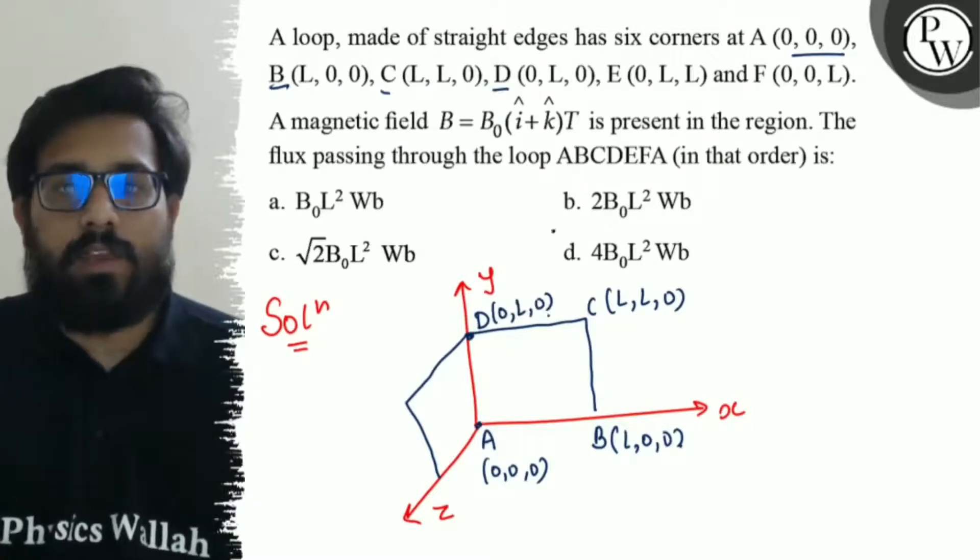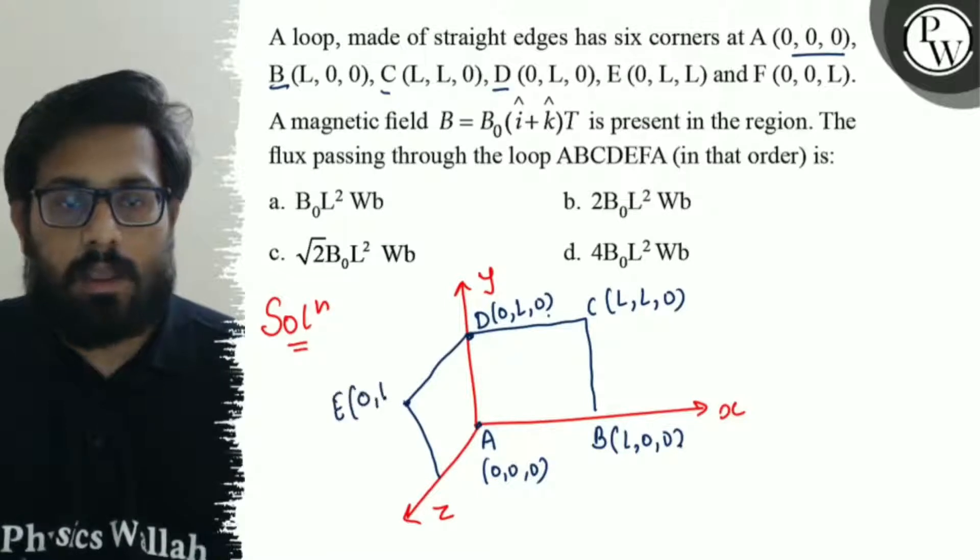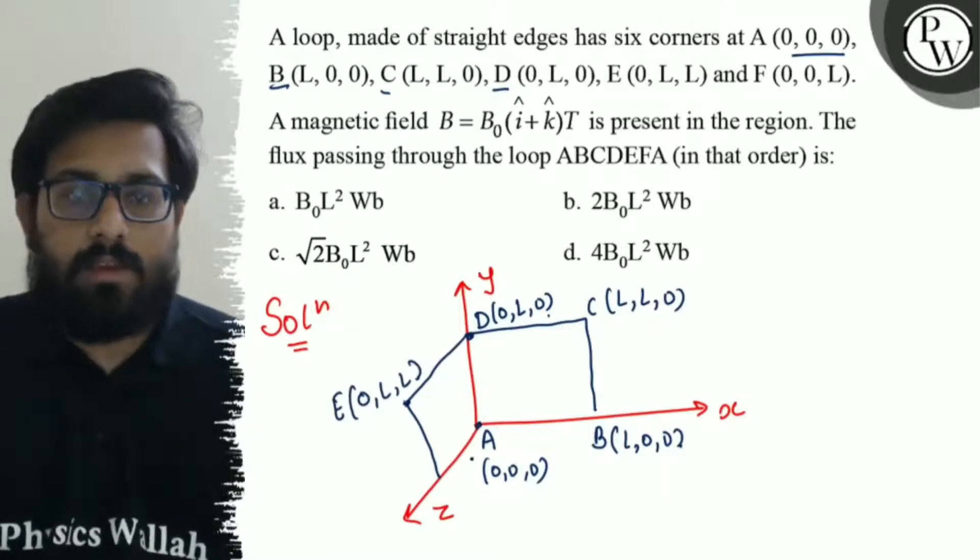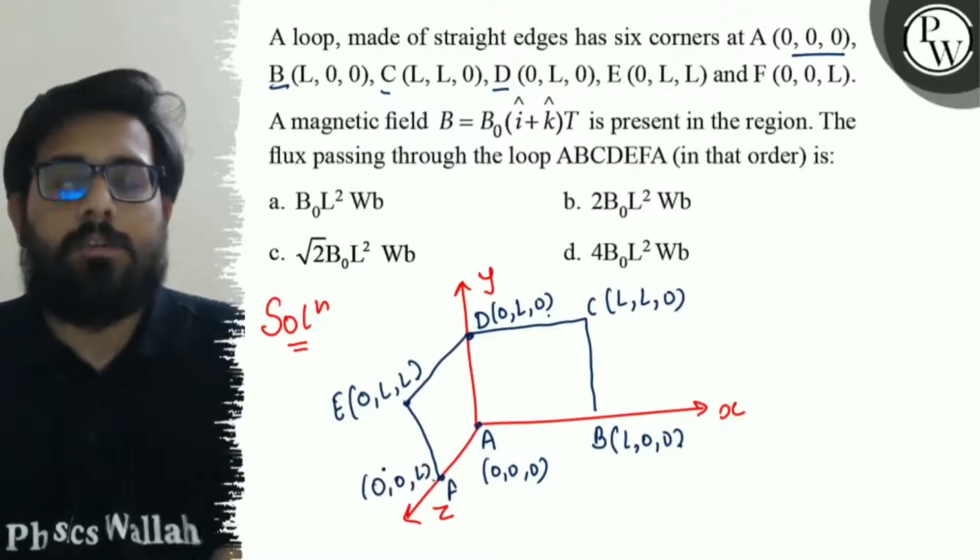Then we have the value of E. So, we have the value of E over here, which is 0, L, L, and the value of F here, which is 0, 0, L. So, we have this complete loop.